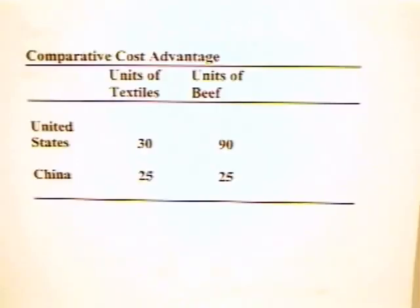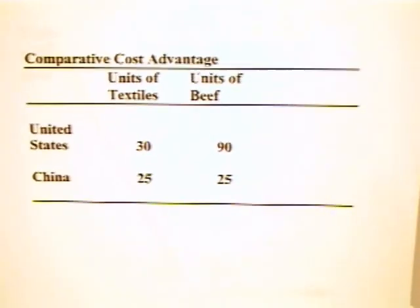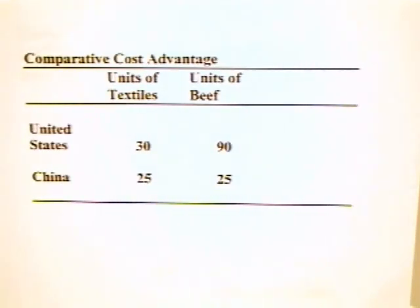In that module, we talked about trade between two individuals, Fred and Harry. In this module, we can talk about trade between two countries, the United States and China, and we can do so in terms of a table that looks very similar to the one that we introduced with Fred and Harry.